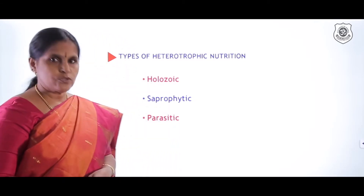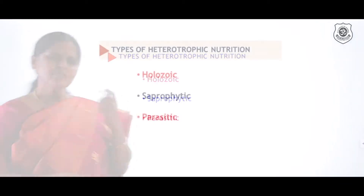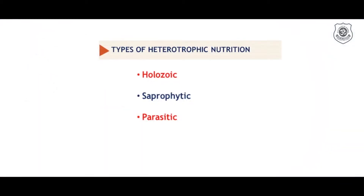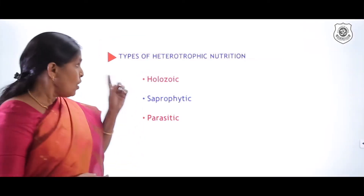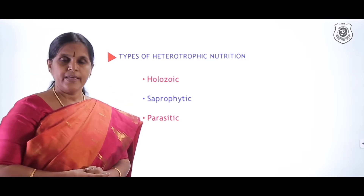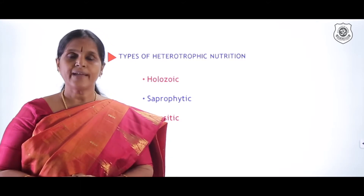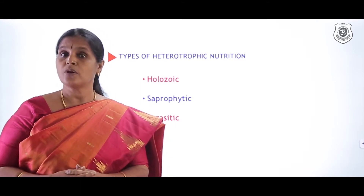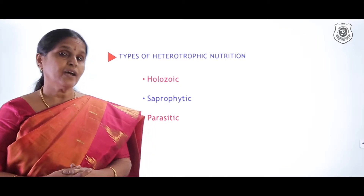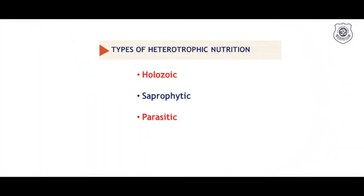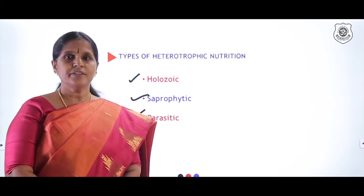What are the various types of heterotrophic nutrition? Can you recollect what I taught you about autotrophic nutrition? 'Auto' means self, 'trophic' means nutrition, which means the organisms are preparing their own food. Heterotrophic nutrition means the organisms cannot prepare their own food; rather they directly or indirectly depend on an autotroph. The different types of heterotrophic nutrition are holozoic nutrition, saprophytic nutrition, and parasitic nutrition.